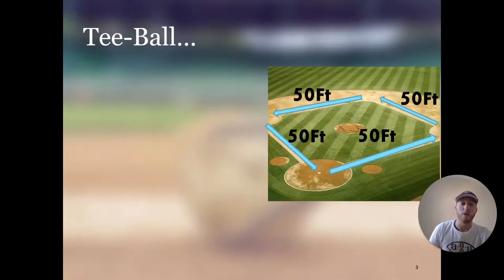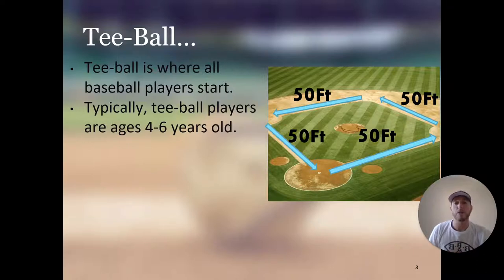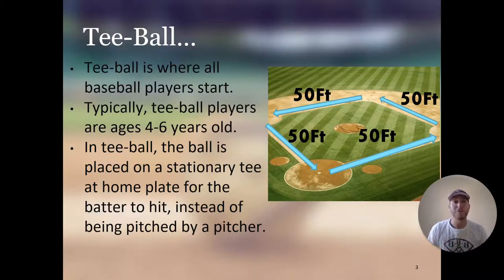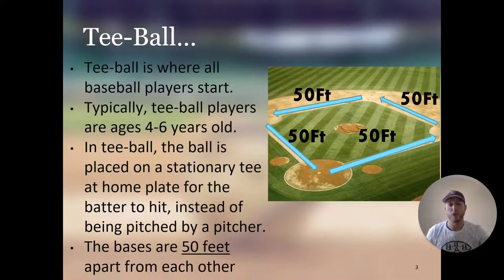In t-ball, which is where all baseball players start, players are typically ages 4 to 6 years old. The ball is placed on a stationary tee at home plate for the batter to hit, instead of being pitched by a pitcher. So in t-ball, all we have to worry about is the distance between the bases, since there's no pitching. The bases are 50 feet apart from each other.